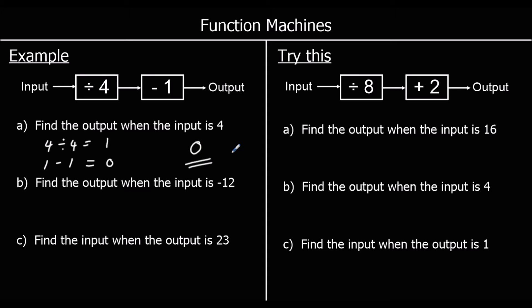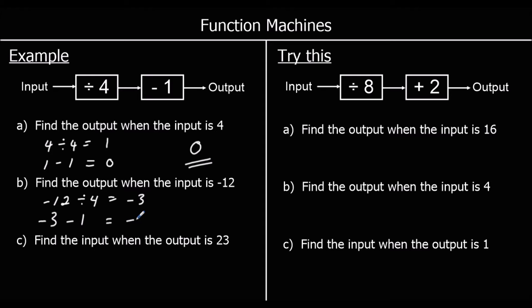Part B: find the output when the input is negative 12. So we're putting negative 12 into the machine, dividing by 4. 12 divided by 4 is 3, so negative 12 divided by 4 is negative 3. And then we're going to take away 1: negative 3 take away 1 is negative 4.